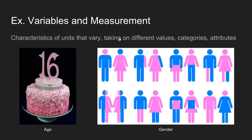Thinking back, we discussed how variables represent characteristics of units that vary. Variables take on different values, categories, or attributes. We talked about two examples of variables in social research — one being age, the other being gender.